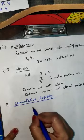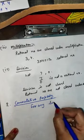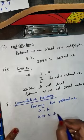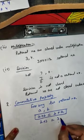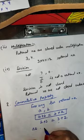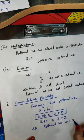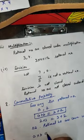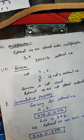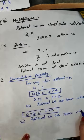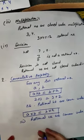Our second property is Commutative Property. In this property, for any two rational numbers A and B, A plus B is equals to B plus A. For example, 2 plus 3 equals 3 plus 2. So rational numbers are commutative under addition. Similarly, A into B is equals to B into A. This means rational numbers are commutative under multiplication.